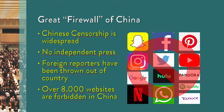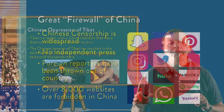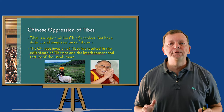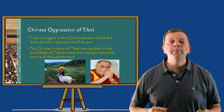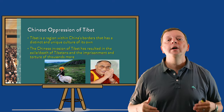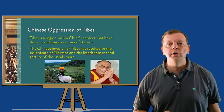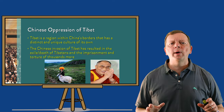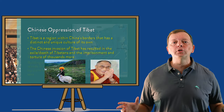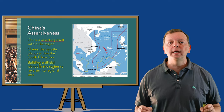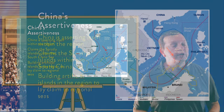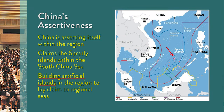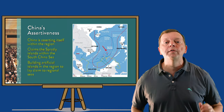As we've discussed in previous lessons, in 1950 China invaded Tibet and annexed it into China. This caused many to flee, such as the Dalai Lama, as well as the imprisonment and torture of thousands more who resisted Chinese rule. Chinese aggression hasn't ended in Tibet — we also see China reasserting itself in the South China Sea. Many countries claim parts of the South China Sea; however, China claims nearly all of it and has even had armed conflict with countries such as Vietnam over the islands in the sea.